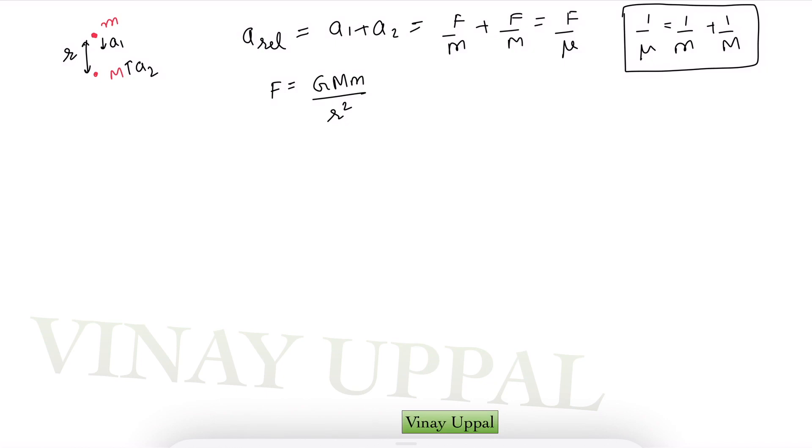Now if I just compare this situation to the situation where one of the particles is fixed. So let us say capital M is fixed and I want to calculate the acceleration of small m. So here small m acceleration will be given by the force GM/r² divided by small m that will simply be GM/r².